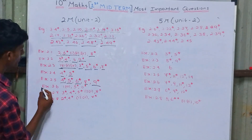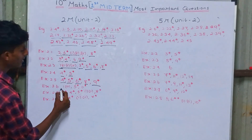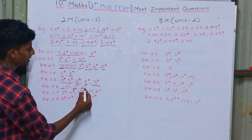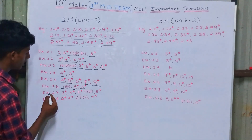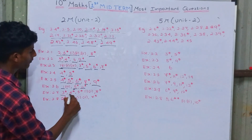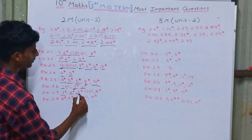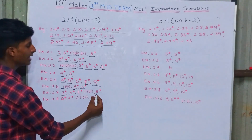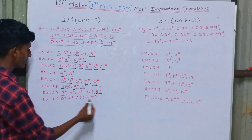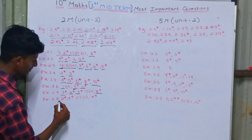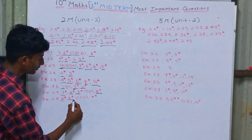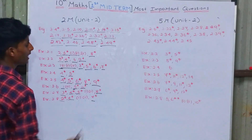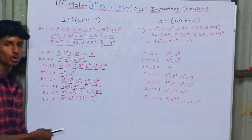Exercise 2.6: 1st sum — 3rd subdivision — 5th sum and 6th sum (very important). Exercise 2.7: 3rd sum, 4th sum, 5th sum — 1st and 2nd subdivision — and 8th sum (very important). Exercise 2.8: 2nd sum, 4th sum — 1st and 2nd subdivision — and 7th sum. All are very important two-mark questions.